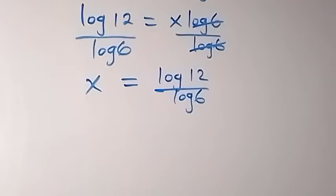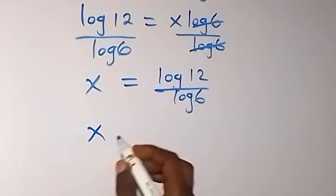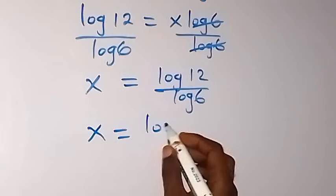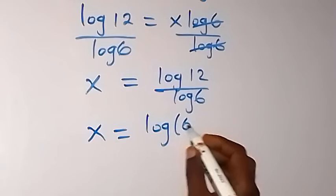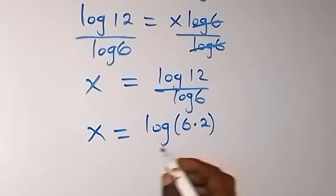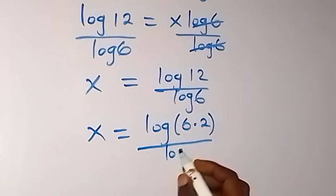To simplify the logarithm, let's write 12 as 6 times 2. We have x equals log of 6 times 2, over log 6.